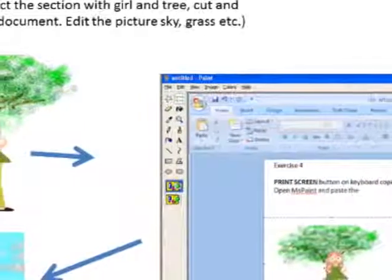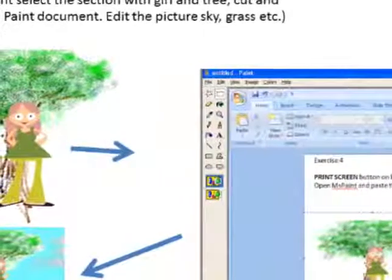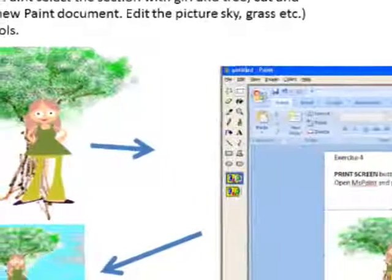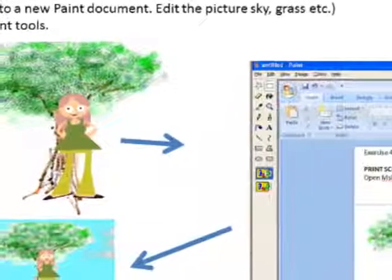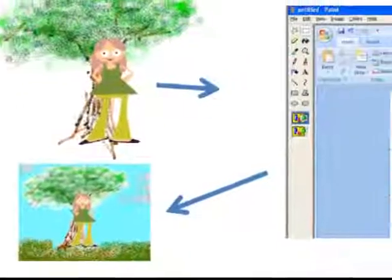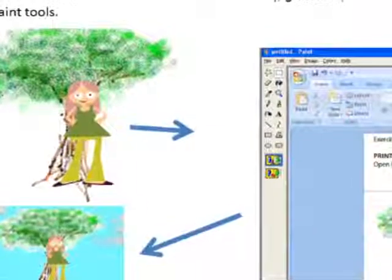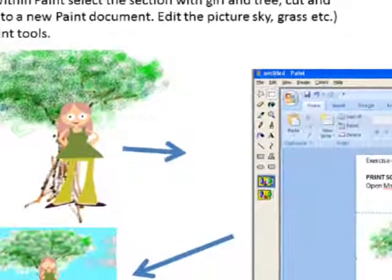The print screen button on the keyboard copies to the clipboard. Open MS Paint and paste the screen dump from the clipboard into Paint. Within Paint, select the section with the girl and the tree, cut and paste into a new paint document. Then edit the picture, adding sky, grass, and so on with the paint tools.